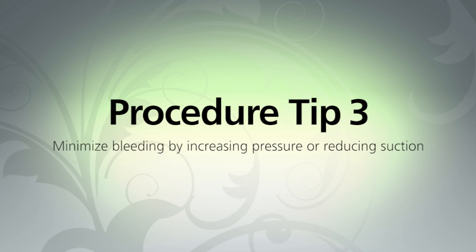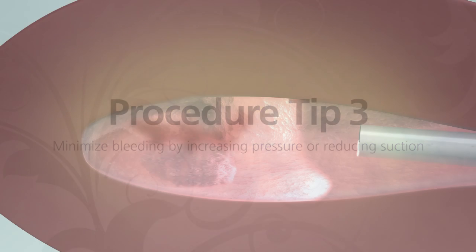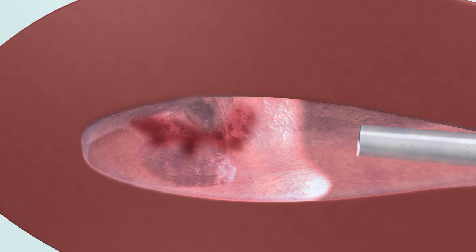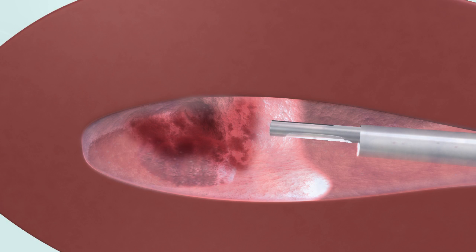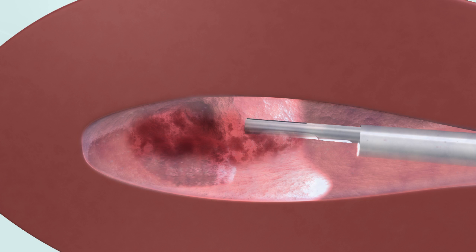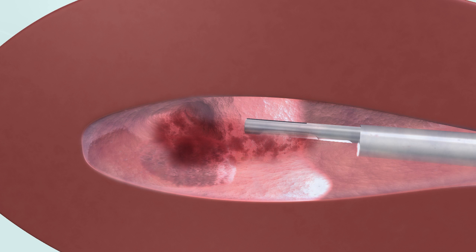If bleeding occurs, extend the Myosure device past the scope and wait a few seconds for the fluid to circulate through the closed Myosure window. The closed window still has a small area around the blade for outflow.